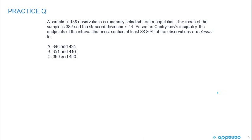So let's just do a quick little question to see your understanding of the Chebyshev's inequality. So a sample of 438 observations is randomly selected from a population. The mean of the sample is 382, and the standard deviation is 14. Based on Chebyshev's inequality,